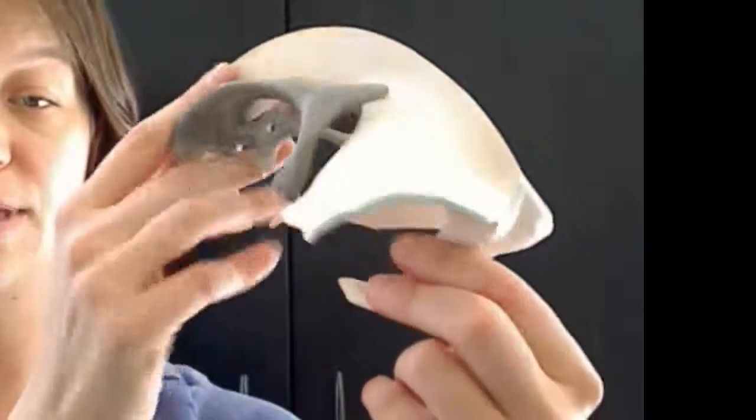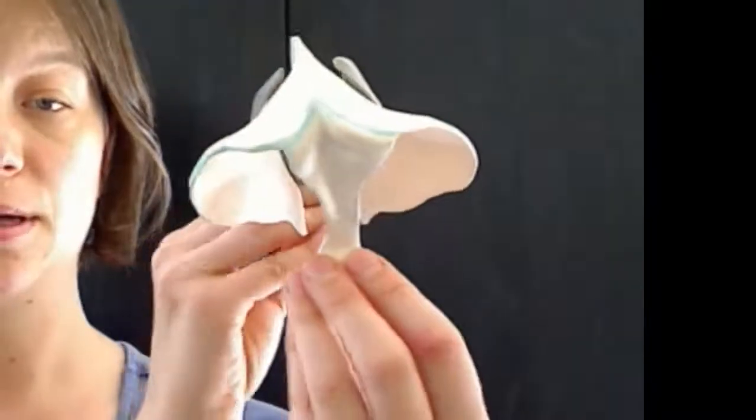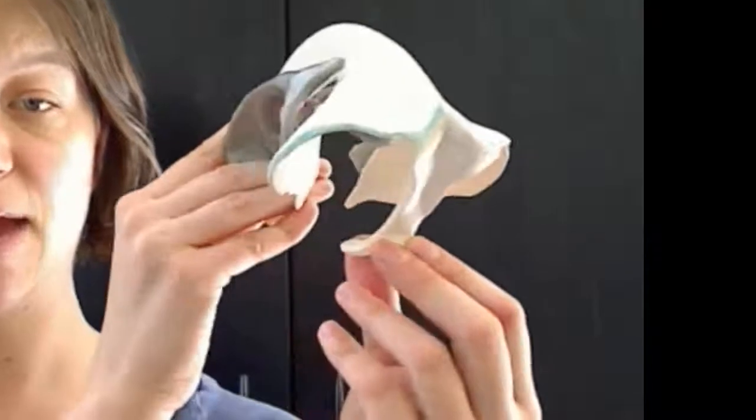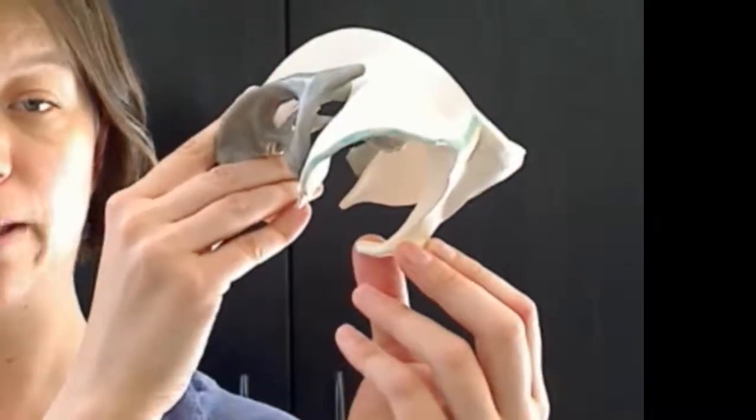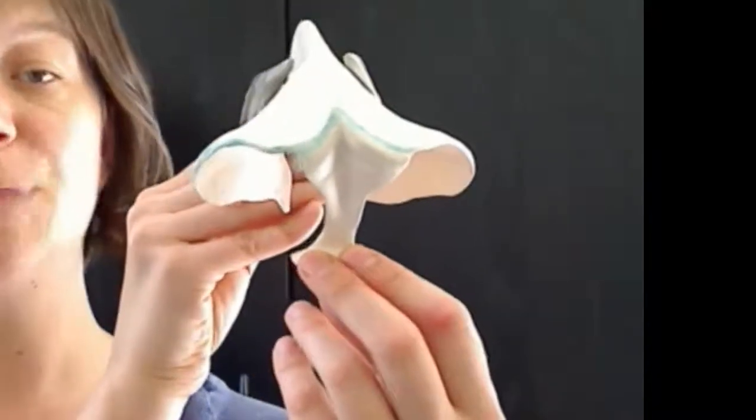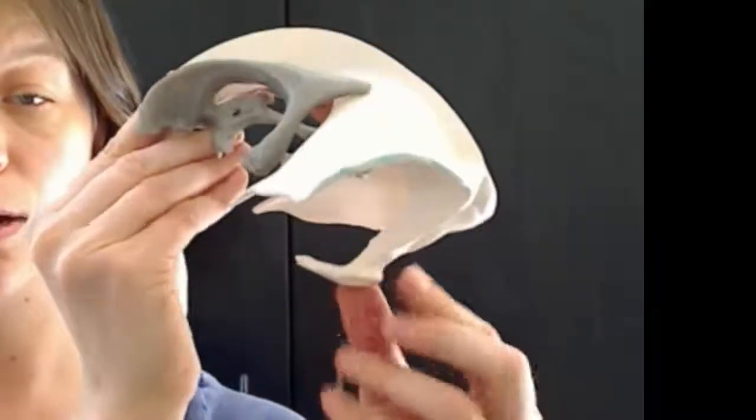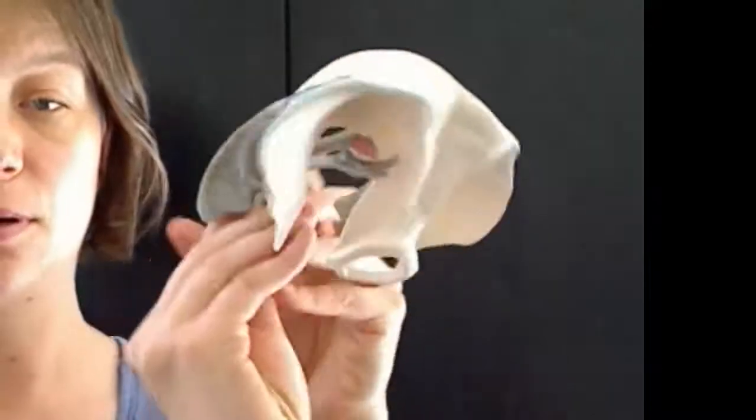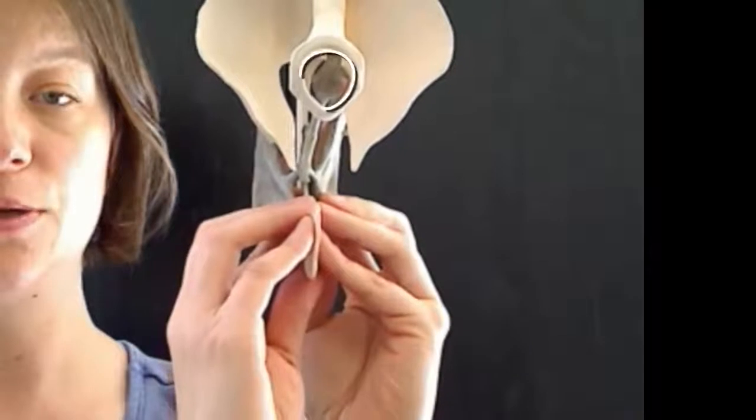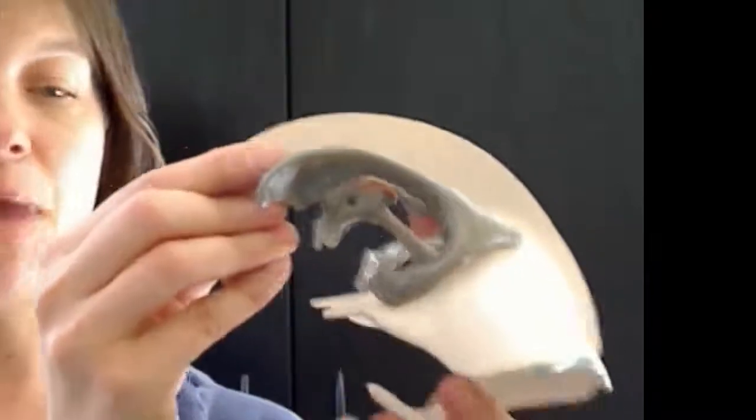And then on the underside, you can see this membrane here is the falx cerebelli. And it divides the left and right hemispheres of the cerebellum. So the falx cerebelli is the part of the falx that runs underneath the tent. And then we have the ring of tissue around the foramen magnum.